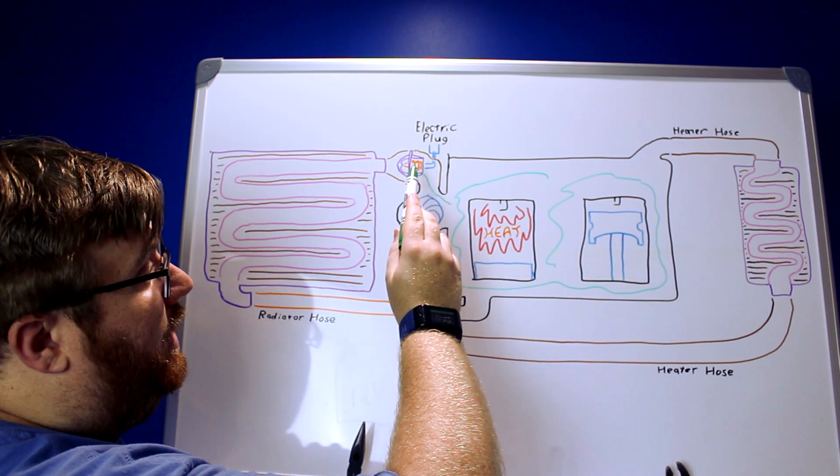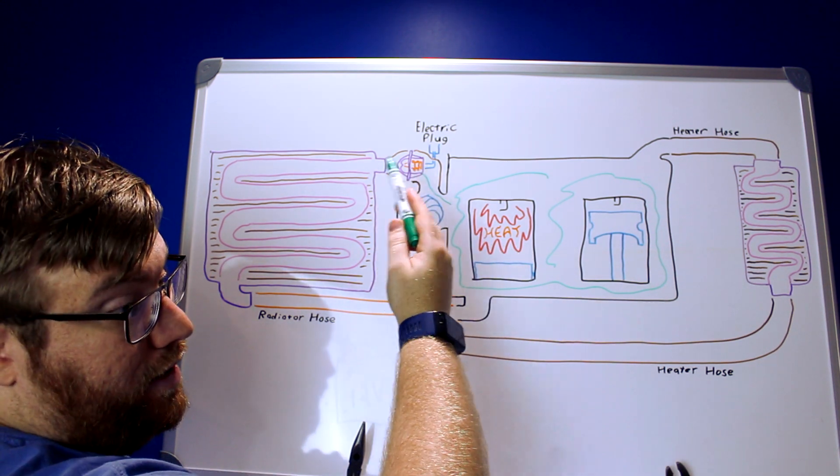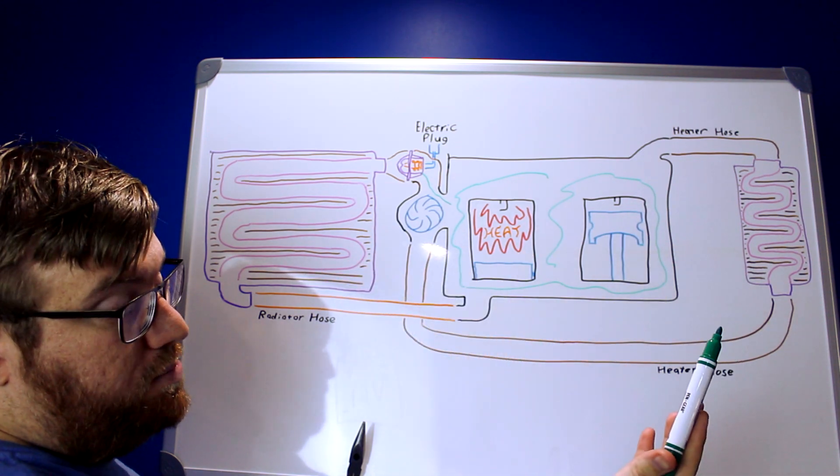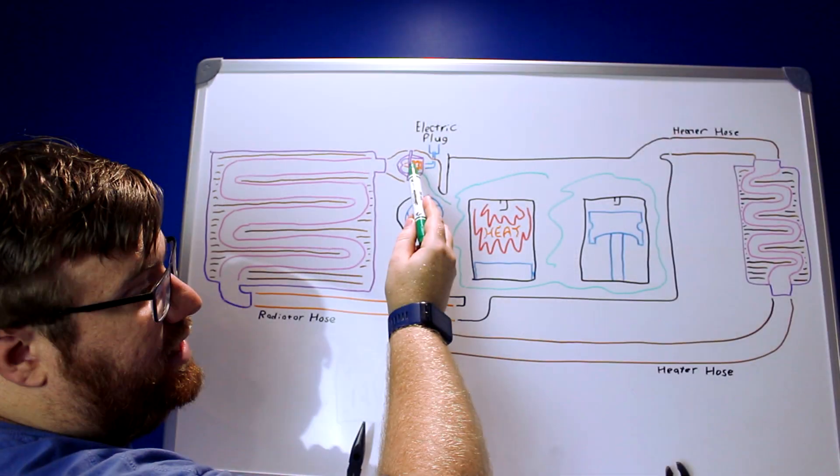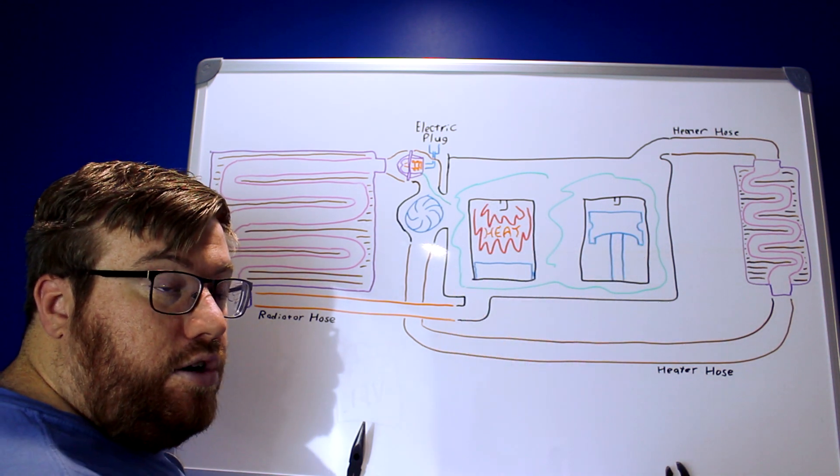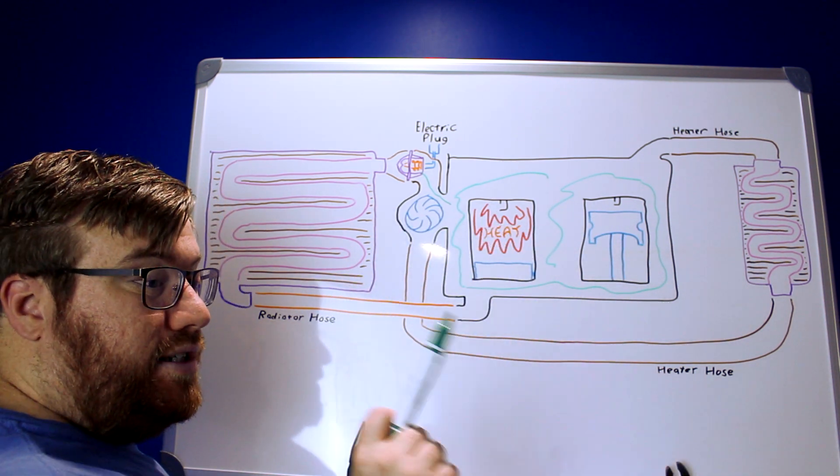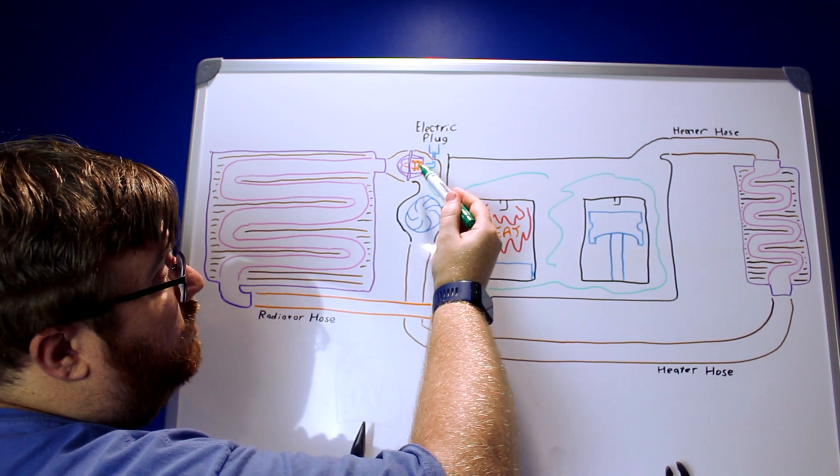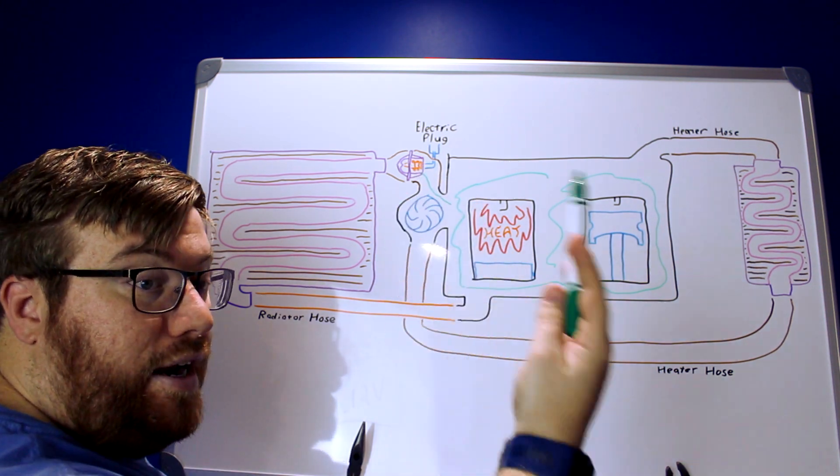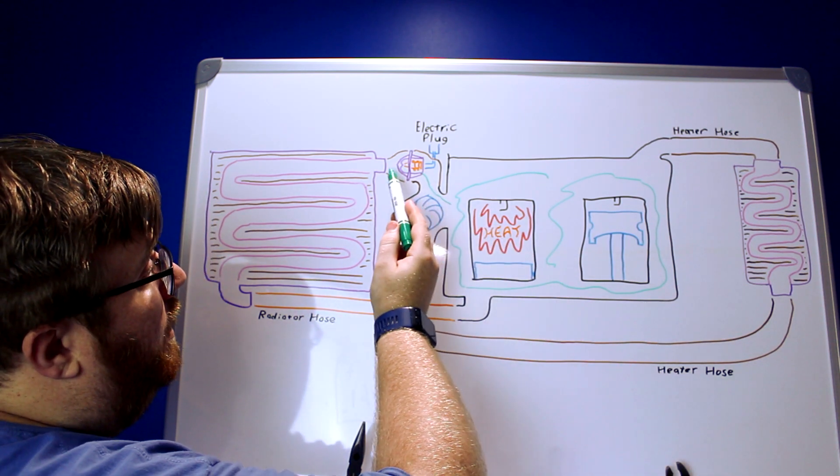but this is going to have a little wax pellet inside of it that will expand and contract with the heat that comes by it. And this needs to be submerged in coolant. There's a little brass piece here. Brass is a good conductor of heat. Coolant is a good conductor. Air is not, so coolant gets up here, and as this warms up, if it gets to a high enough temperature, it will expand and let coolant through.